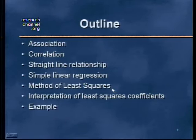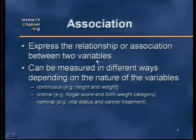We'll look at simple linear regression using the least squares technique, covering the form of the straight-line relationship, how to calculate and interpret the intercept and slope, and conclude with an example. Association is simply the relationship between two variables, and the appropriate statistical method depends on the nature of those variables.